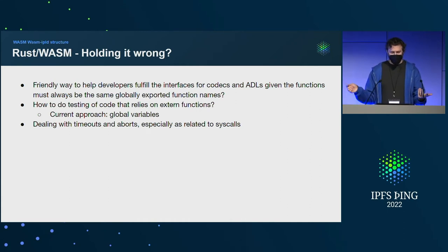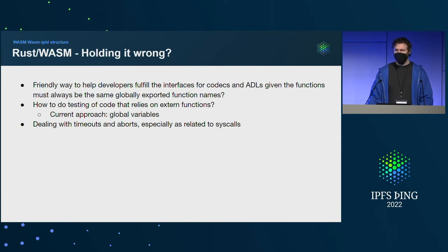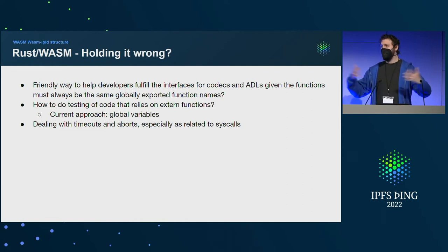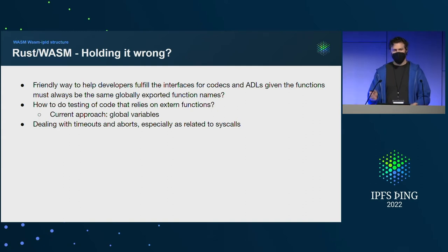This one is perhaps more serious: dealing with resource usage and when to give up — timeouts, aborts, syscall resource utilization, how to handle contention, how much parallelism. What is the right way to encode that data and move it into our WebAssembly function calls? Perhaps our FVM friends who deal with this in a much more real way will have some advice.